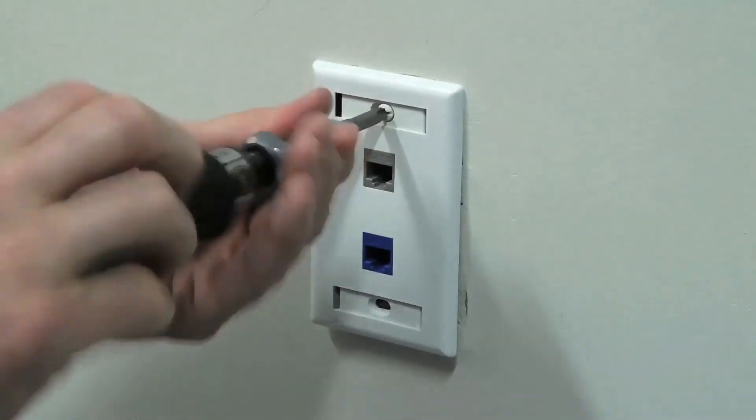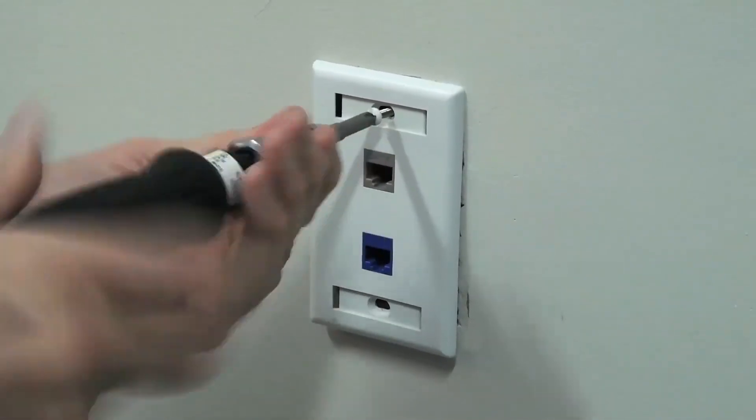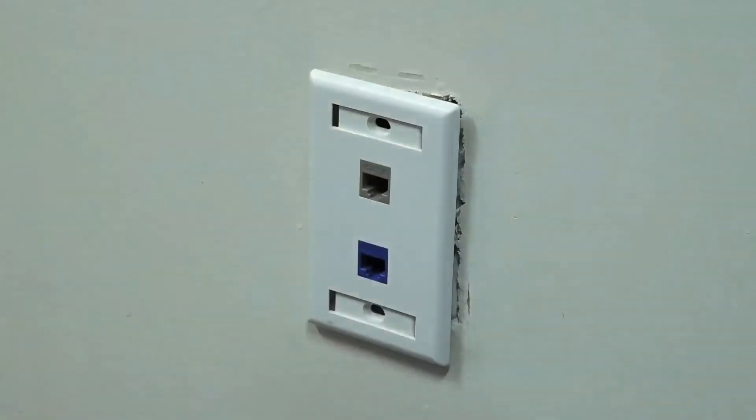Next, we will show the bracket being attached to a junction or gang box. If applicable, remove the wall plate from the box and any ethernet cables from the wall plate.